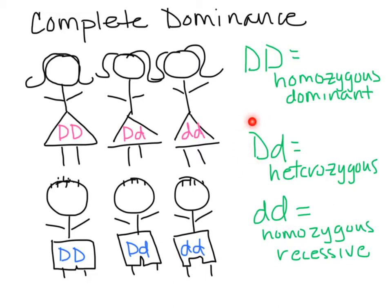If you got one dominant copy from mom and one recessive copy from dad — or vice versa, it doesn't matter — you are a heterozygous genotype. If you got two recessive alleles, one from mom and one from dad, you are a homozygous recessive genotype. The setup of your alleles is your genotype, so all of these are genotypes.